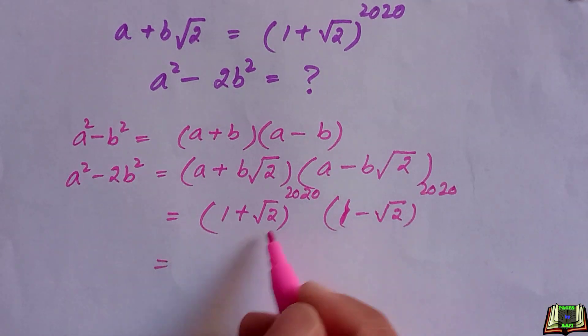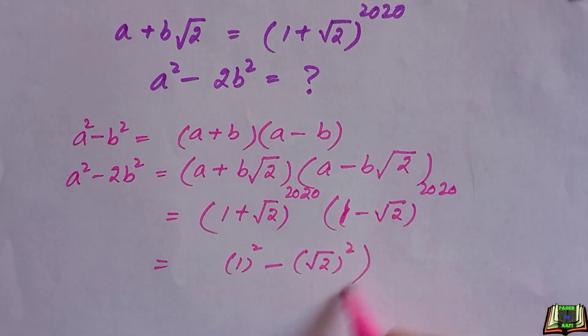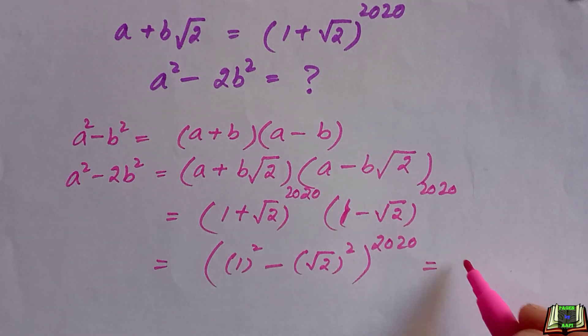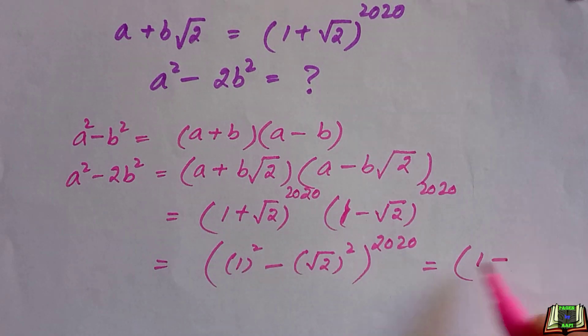If we multiply, (1 + √2)(1 - √2) raised to the power 2020. One squared is equal to 1, and this square and root cancel out to give minus 2 raised to the power 2020.